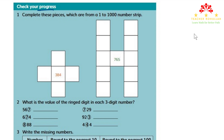The first question in this part says: complete the pieces from the 1 to 1000 number strip. We have two pieces. The first one has 384 in the center, and the second one has 765 in the center.